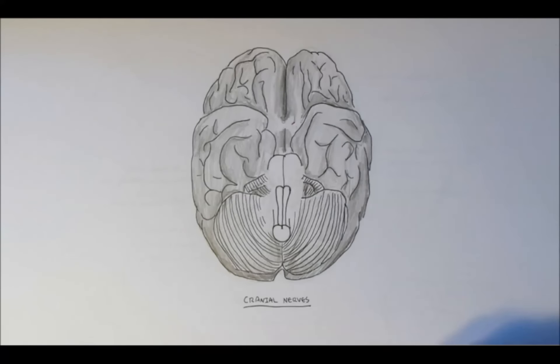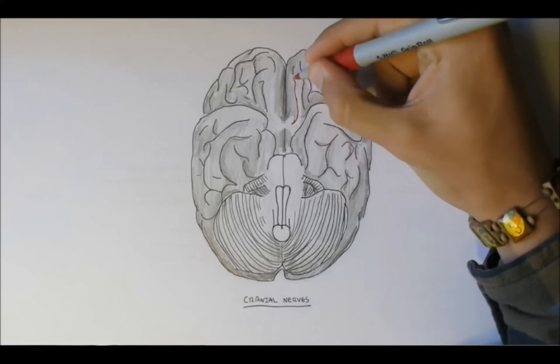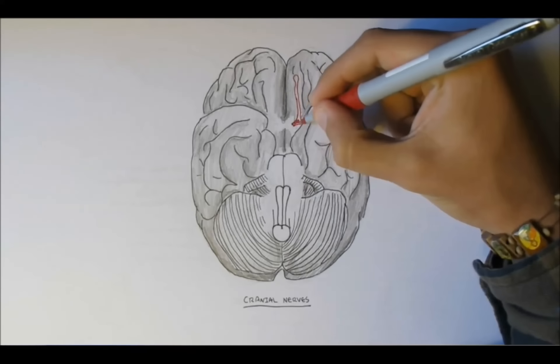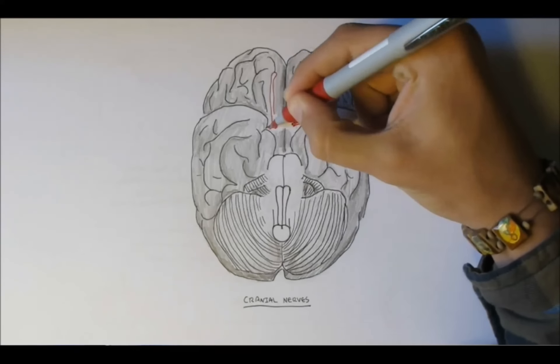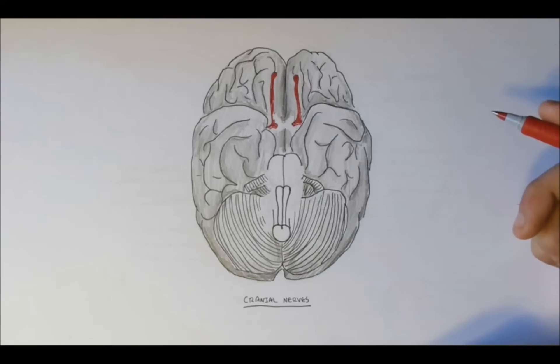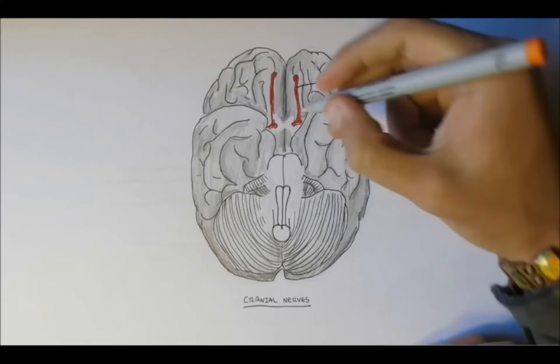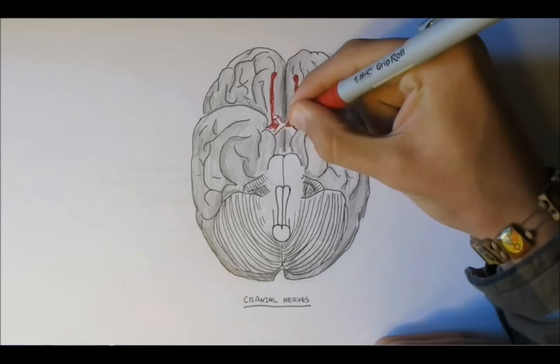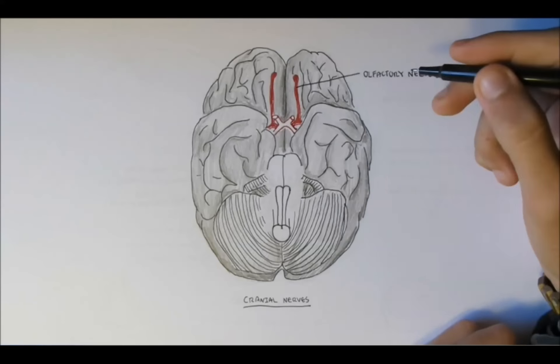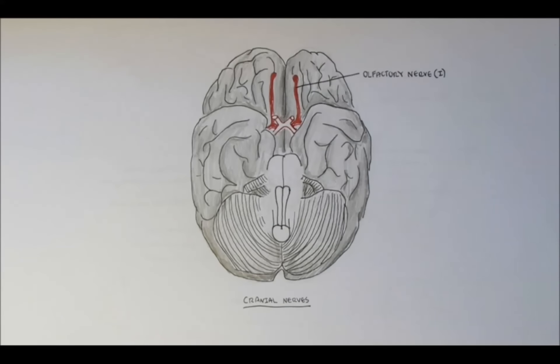So the first cranial nerve is situated in the cerebrum, arising around here, and the first cranial nerve is known as the olfactory nerve, nerve number 1. Nerve number 2, which is the optic nerve, arises also from the cerebrum.